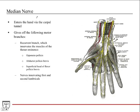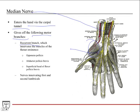Now for the nerves. The median nerve enters the hand via the carpal tunnel — the flexor retinaculum is cut away here so we can see the median nerve dividing into its branches. It gives off the following motor branches: the recurrent branch, which we talked about when discussing the thenar muscles, innervating the opponens pollicis, abductor pollicis brevis, and the superficial head of flexor pollicis brevis. It also innervates the first and second lumbricals, shown right here in the diagram.